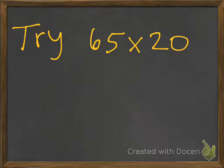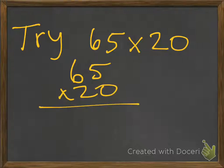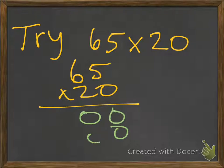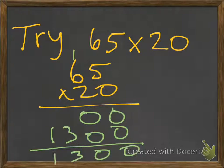All right, how'd you do? Did you do it with an array, or did you just solve with an algorithm? Let's try 65 times 20. We can work out: 5 times 0 is 0, 0 times 6 is 0. Then you add your 0. 2 times 5 is 10, and 6 times 2 is 12, plus 1 more is 13. And we get 1,300.